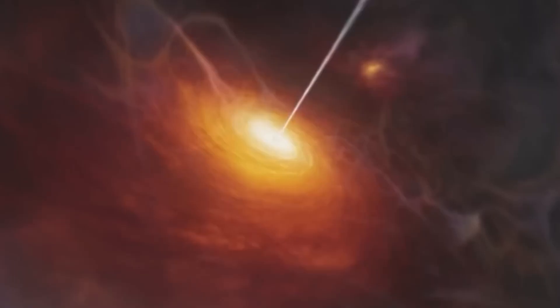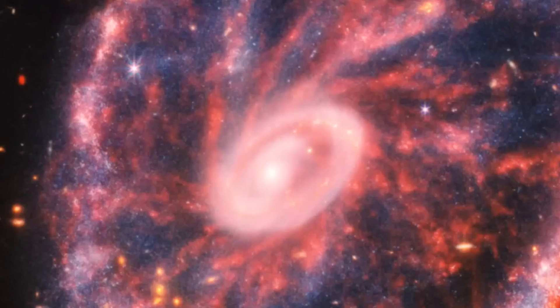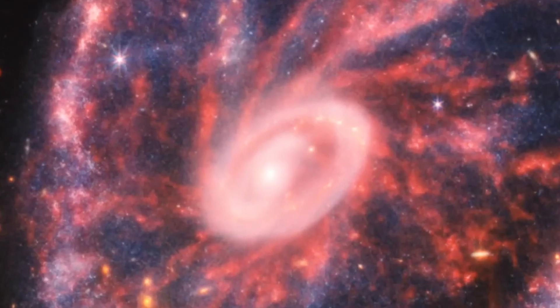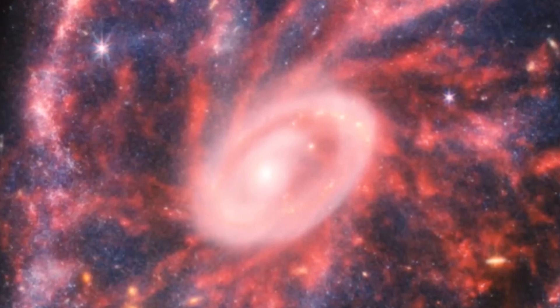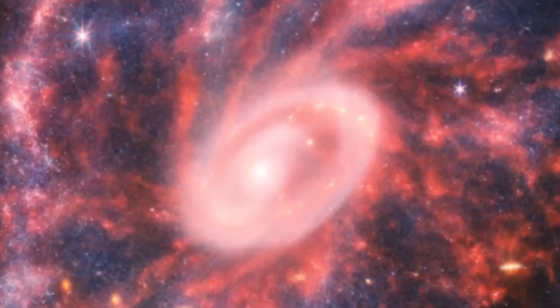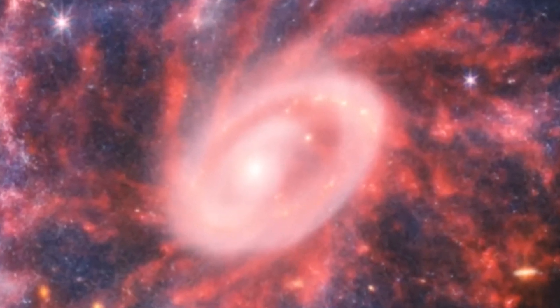This is because young stars are easier to see through dust when viewed in infrared light. This latest composite image furthers our understanding of the Cartwheel Galaxy's peculiar wheel-like star system and its violent past.